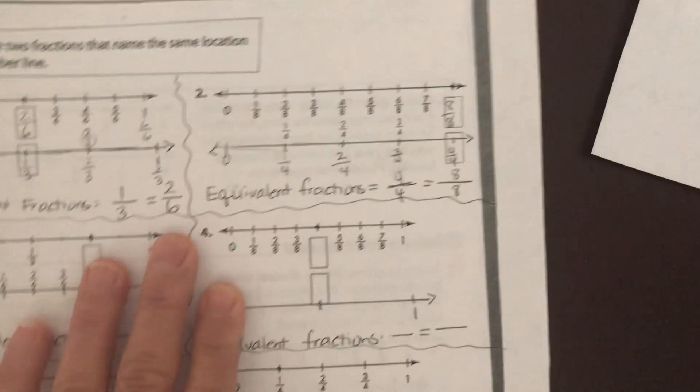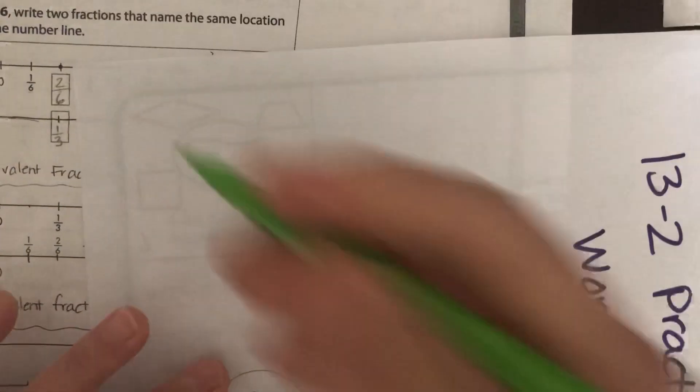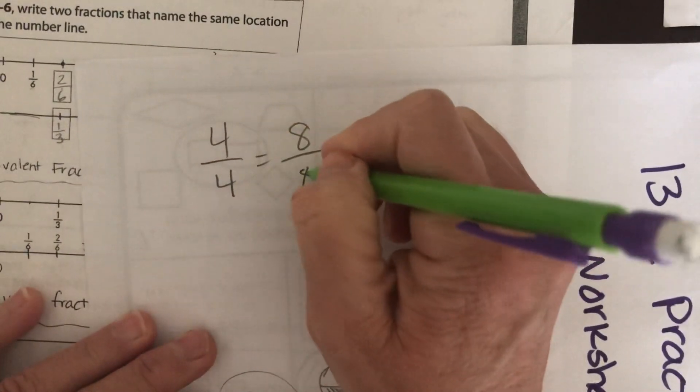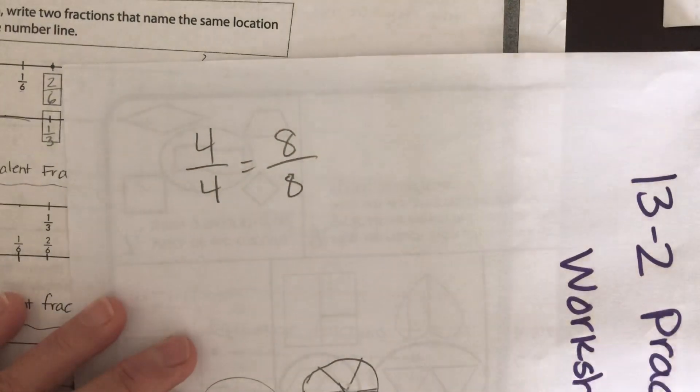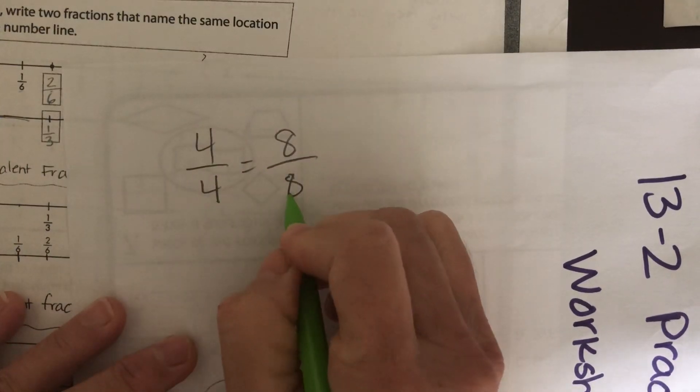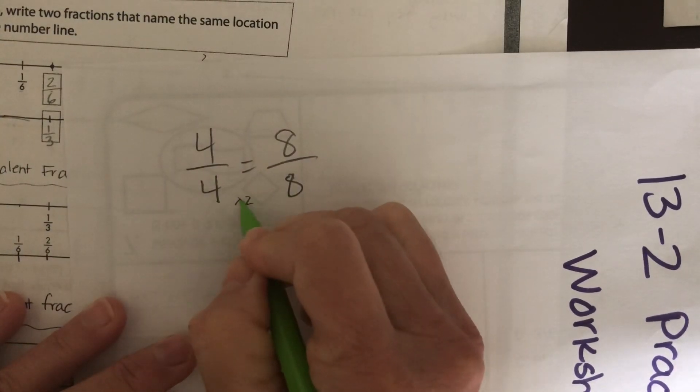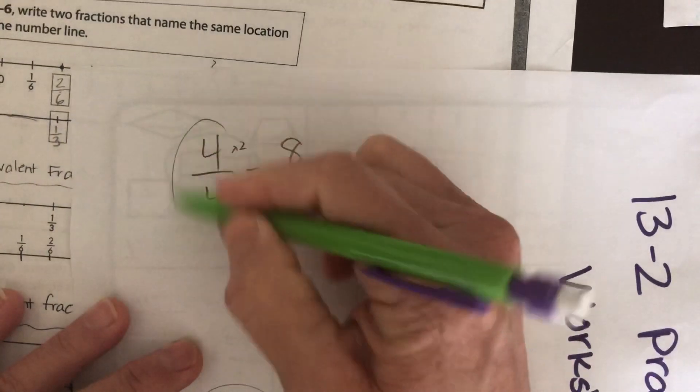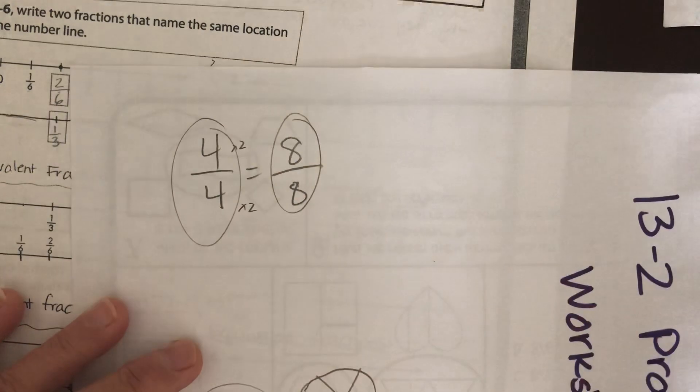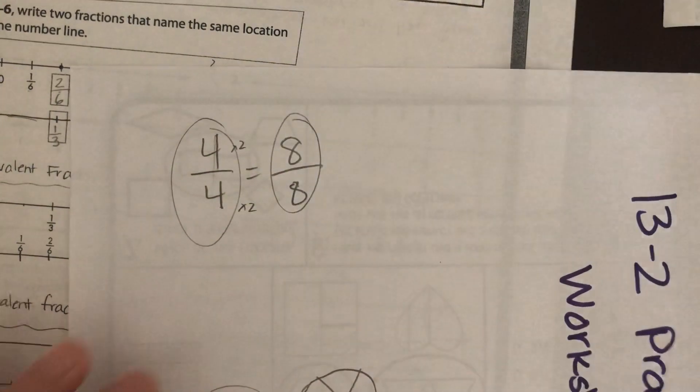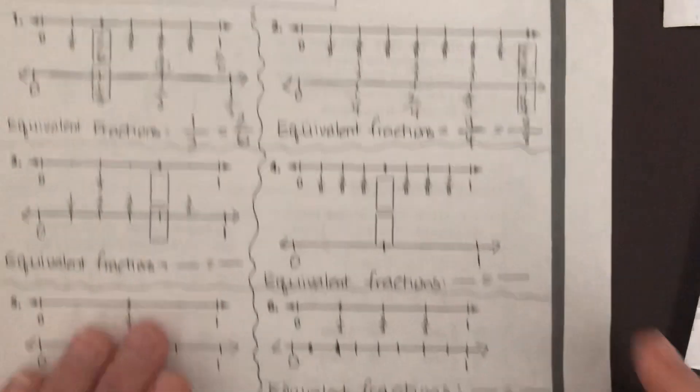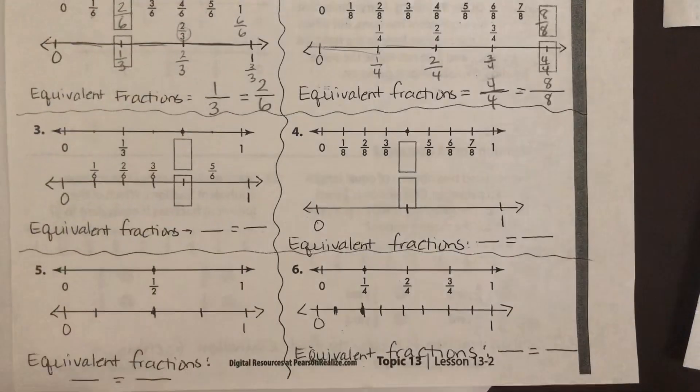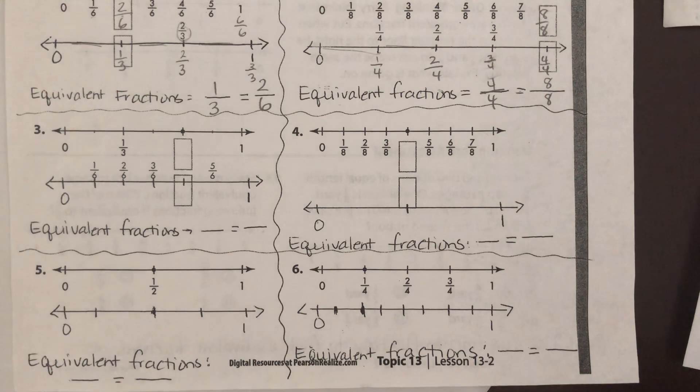So we're going to say that 4-4ths is equivalent to 8-8ths. Okay, and again, a couple ways to know that. 4-4ths is equivalent to 8-8ths. 4 times what equals 8? 2. And 4 times 2 equals 8. Plus, we know that 4-4ths is one whole, and 8-8ths is one whole. So whenever our numerator and denominator are the same, it's going to equal one whole. Okay, I would like you to do 3, 4, 5, and 6. I'm going to have you pause it and do those. Okay?